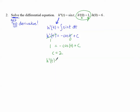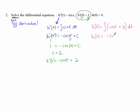So H prime of T equals negative cosine of T plus 2. Remember, we're trying to solve the differential equation — meaning no derivative remaining. So we still have a derivative, and we have to do this process again. To get to H of T, we take the antiderivative of that first derivative: negative cosine of T plus 2 DT. So H of T equals negative sine of T plus 2T plus C — another constant of integration. Because it's the same problem, I should go back and call the first one C sub 1, so C sub 1 equals 2, and this second one is C sub 2.